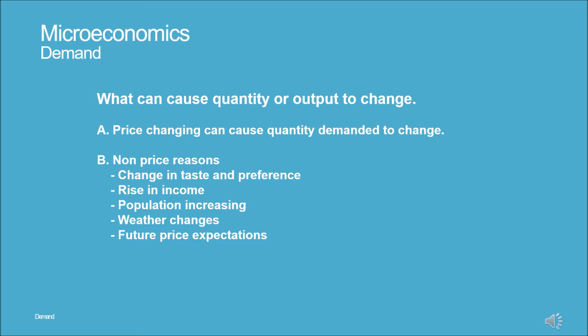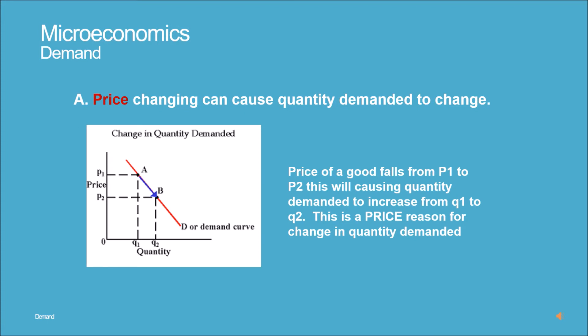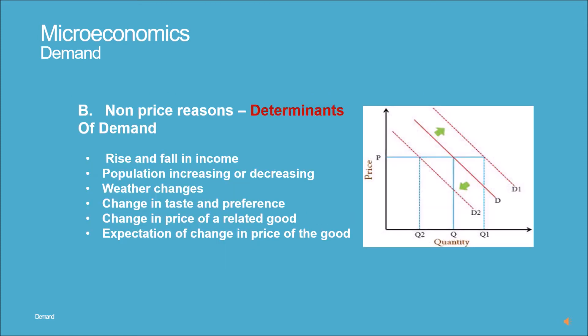What can cause quantity or output to change? A) A price change can cause quantity demanded to change. B) Non-price reasons include: change in taste and preference, rise in income, population increasing, weather changes, and future price expectations. When the price of a good falls from P1 to P2, this causes quantity demanded to increase from Q1 to Q2. This is a price reason for change in quantity demanded.